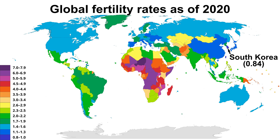Countries shaded in yellow, red, and purple have higher than replacement level fertility, with Niger having the highest rate at 7.0. Higher fertility rates in developing countries reflect the need for children to engage in farming and other economic pursuits, as well as the lack of contraceptive access.